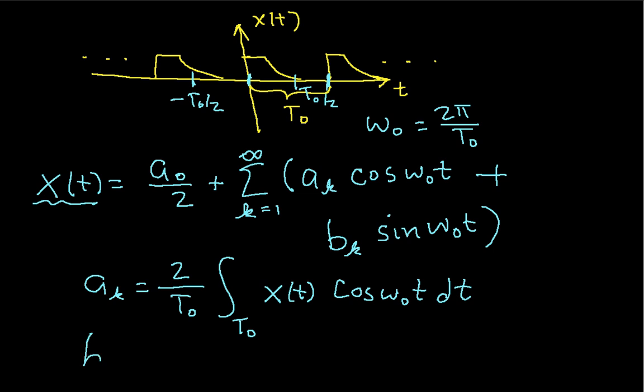And the b sub k's are defined similarly, except that instead of multiplying x of t by a cosine, you multiply it by a sine.